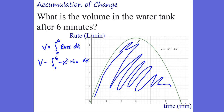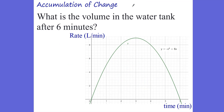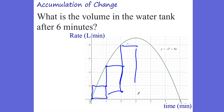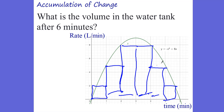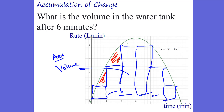A possibly easier but less exact approach is to take little rectangles under the curve and add them all up — that gives you an approximation of the volume as the area underneath. But that would be an underestimation, because you're not accounting for all the little areas between the tops of the rectangles and the actual curve.